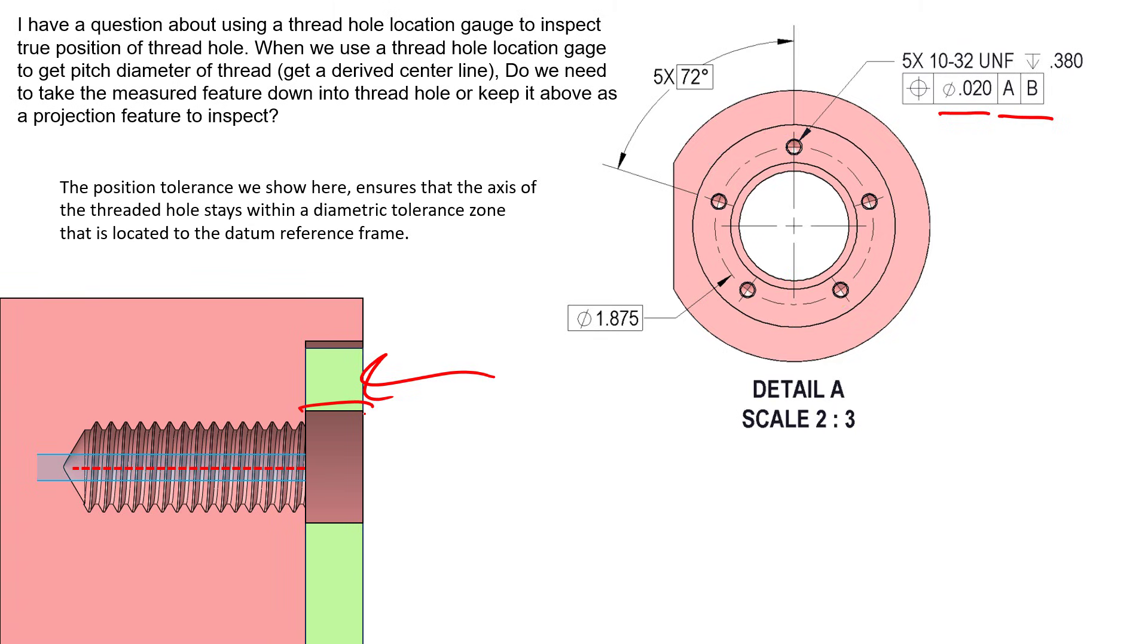There's a green collar that's got some clearance holes and we want to make sure a fastener fits through that location. This position feature control frame, as we show here, ensures that the axis of the threaded hole stays within a diametric tolerance zone that's located in the datum reference frame. This red axis is the axis of the pitch cylinder diameter of the threaded feature, and that axis has to be inside the diametric tolerance zone of 20,000s.